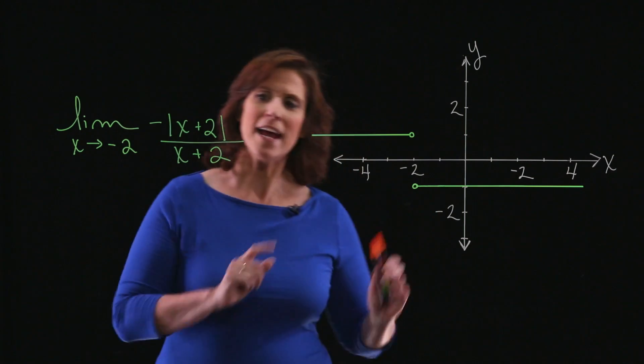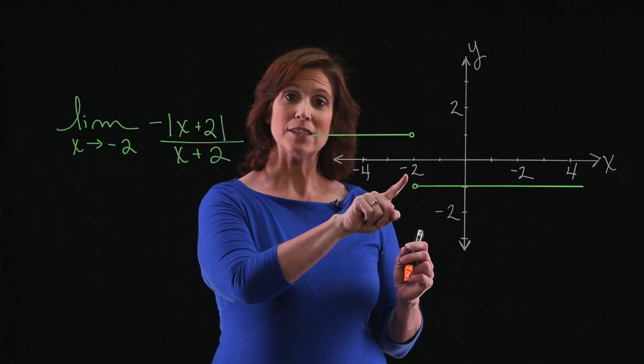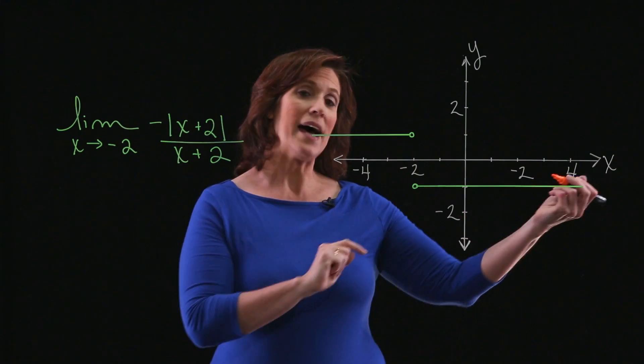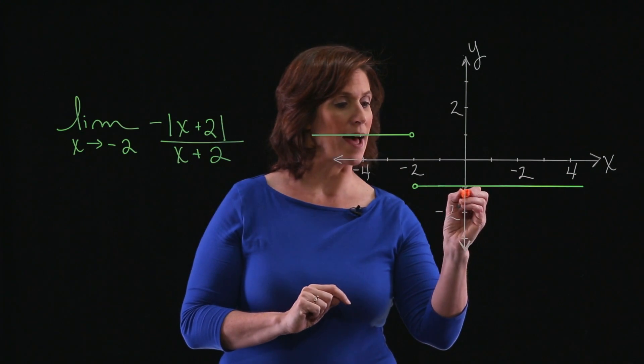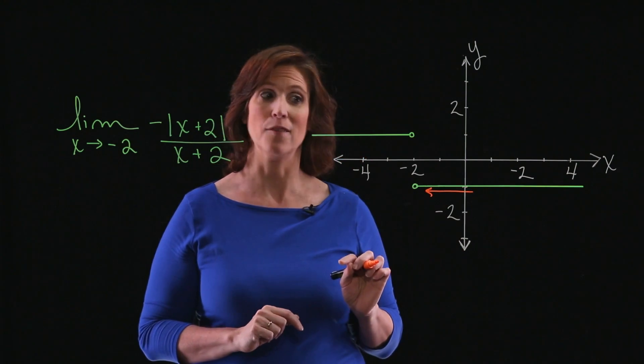Well, if you take a look at the graph, I'm interested in what's happening when x gets close to negative 2. So as I approach from the right-hand side, it looks like those y values are getting closer and closer to negative 1.